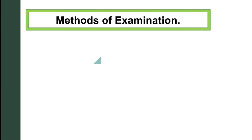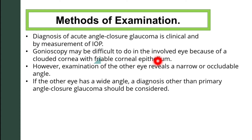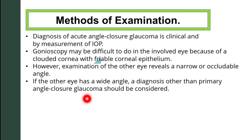Diagnosis of acute angle closure glaucoma is clinical and by measurement of intraocular pressure. Gonioscopy may be difficult to perform in the involved eye because of a clouded cornea with friable corneal epithelium; however, examination of the other eye reveals a narrow or occludable angle. If the other eye has a wide angle, a diagnosis other than primary angle closure glaucoma should be considered.